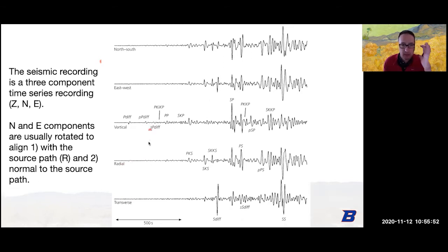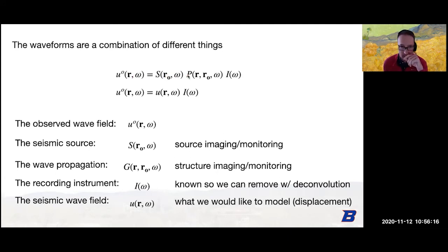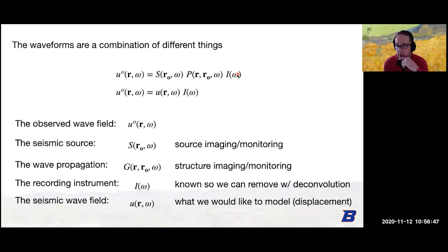This is called a seismogram with three components. The waveforms are a combination of usually three things: U-naught is our observed wave field — we use U to represent displacement — observed at some location R, written in the frequency domain. It's a combination of the source S at R-naught depending on frequency, the Green's function G describing how the wave propagates from source to receiver, and the instrument response I.